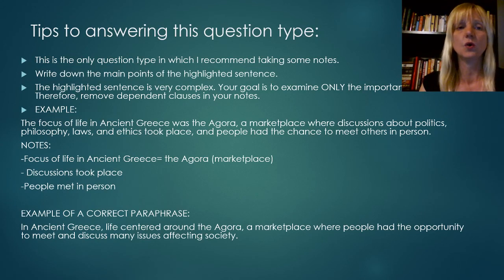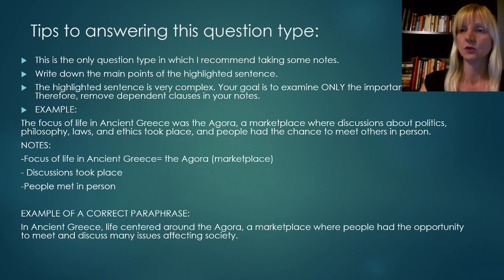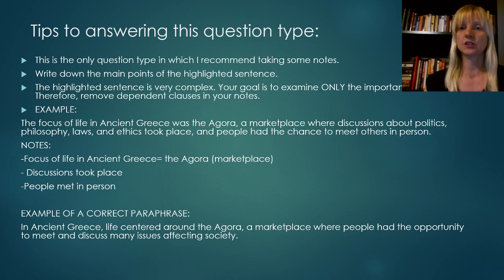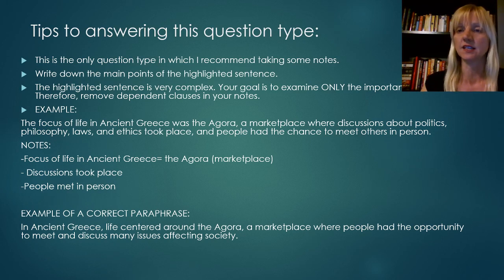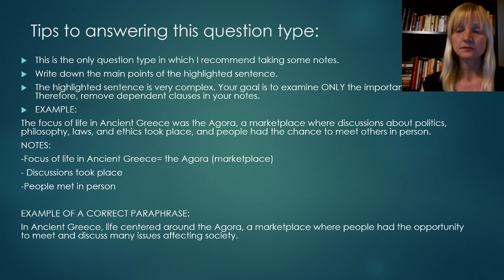This is the only question type in the reading section in which I recommend taking some notes. I usually don't tell students to take notes in the reading section — I think it's best to look at the original information as it's presented by the ETS. However, in this one, it's a good idea to take some notes. You should write down the main points of the highlighted sentence. There's usually two or three that are very important. Once you take those down on paper, it's a lot easier to look at the four choices and find which one is correct.